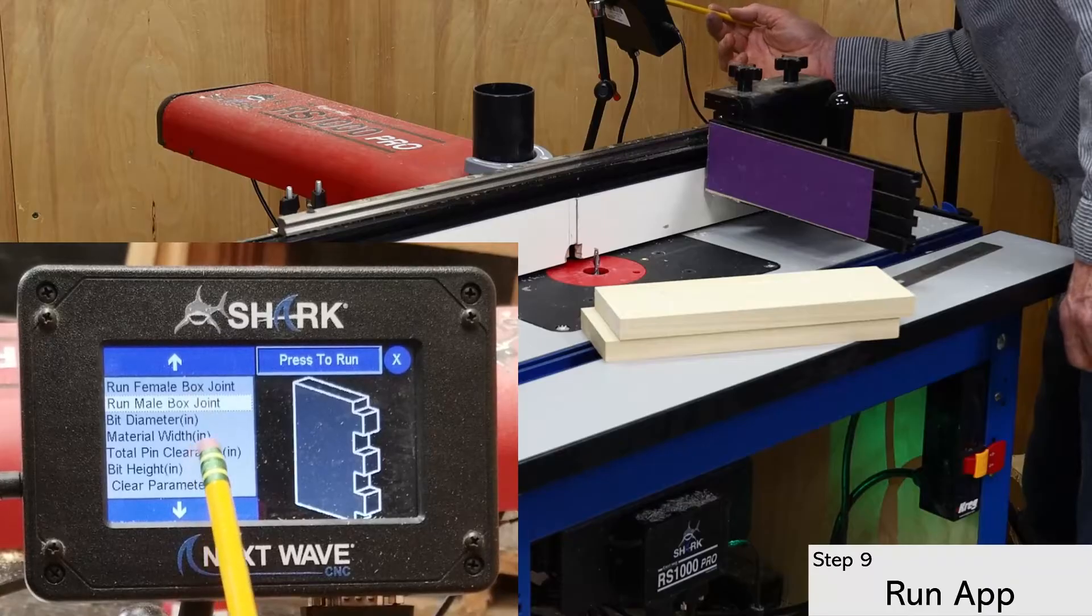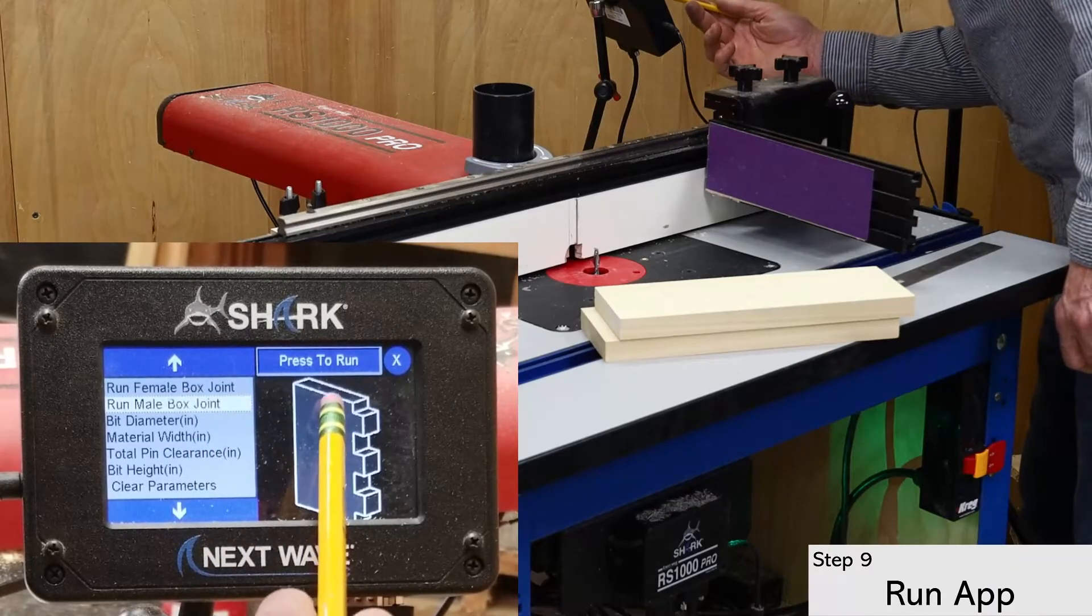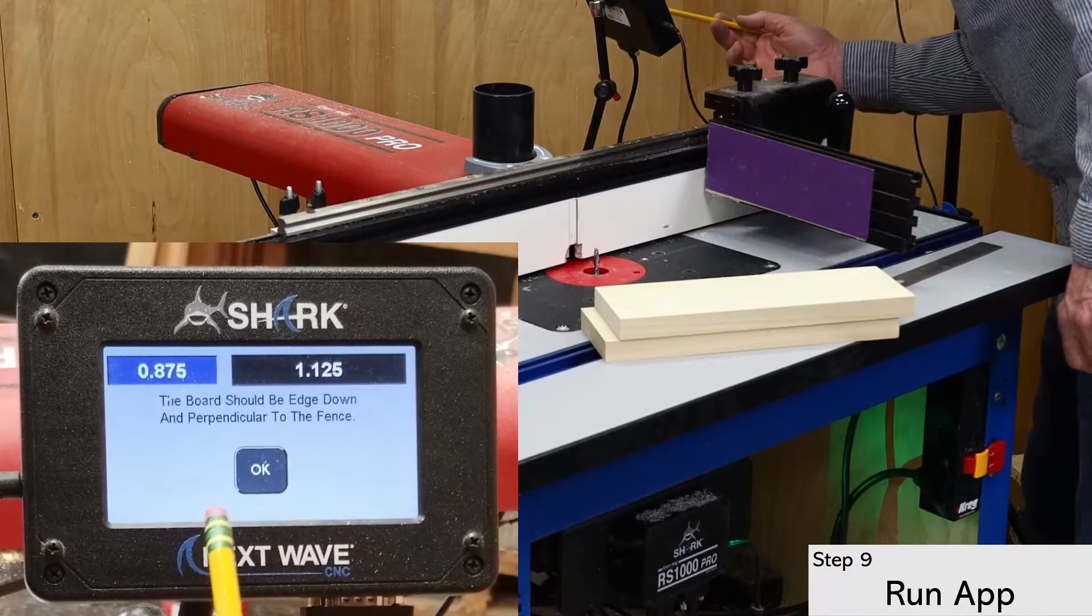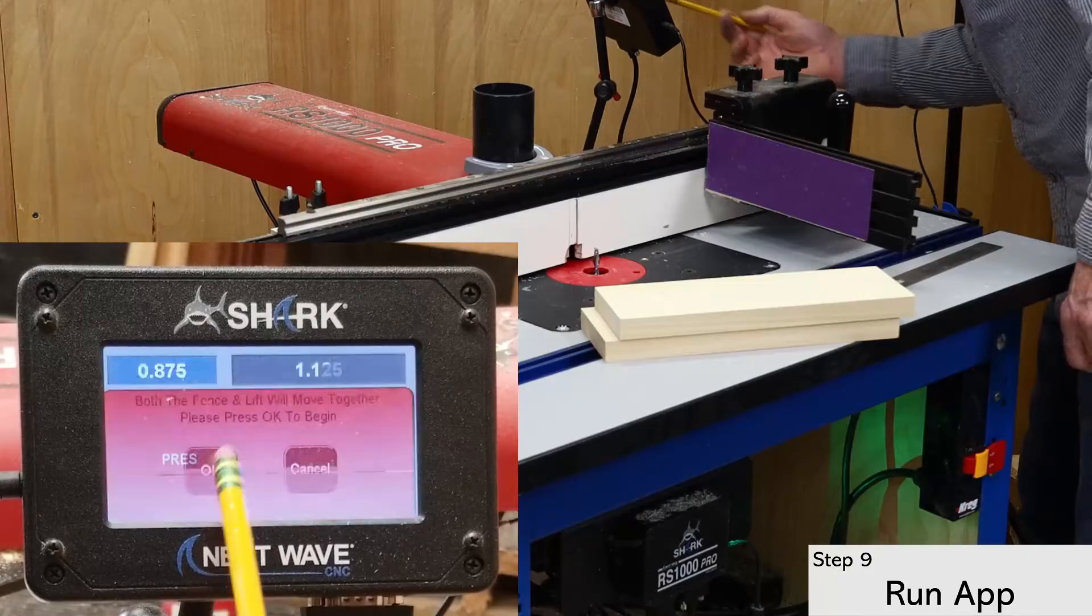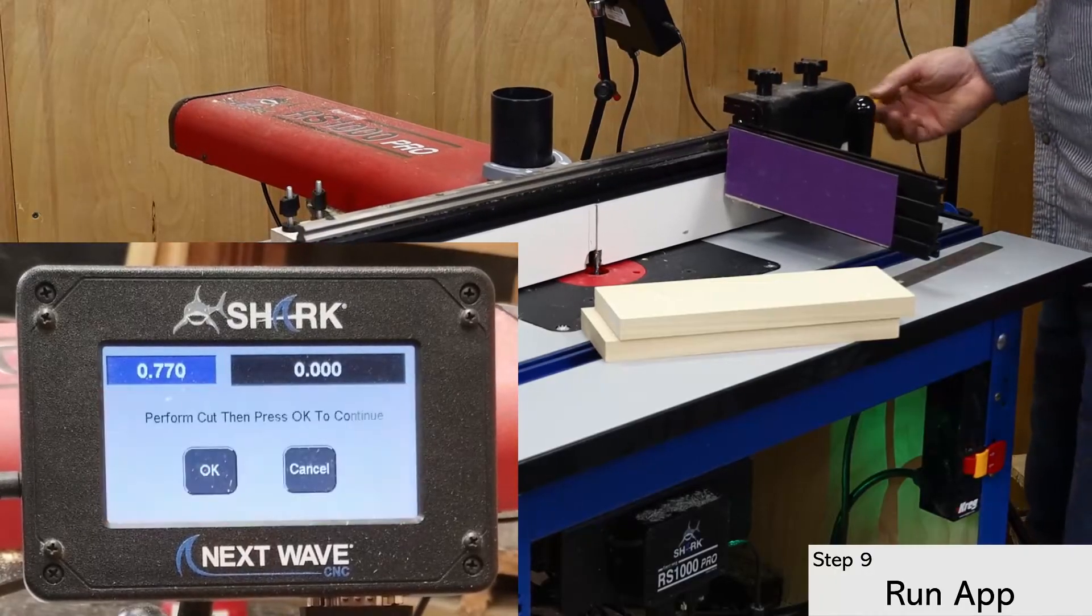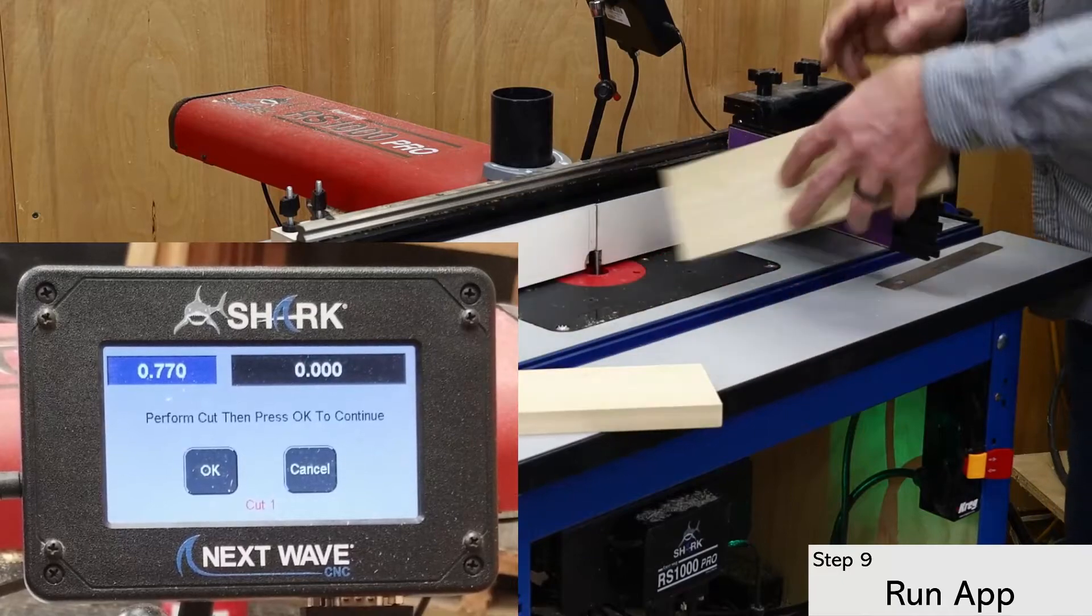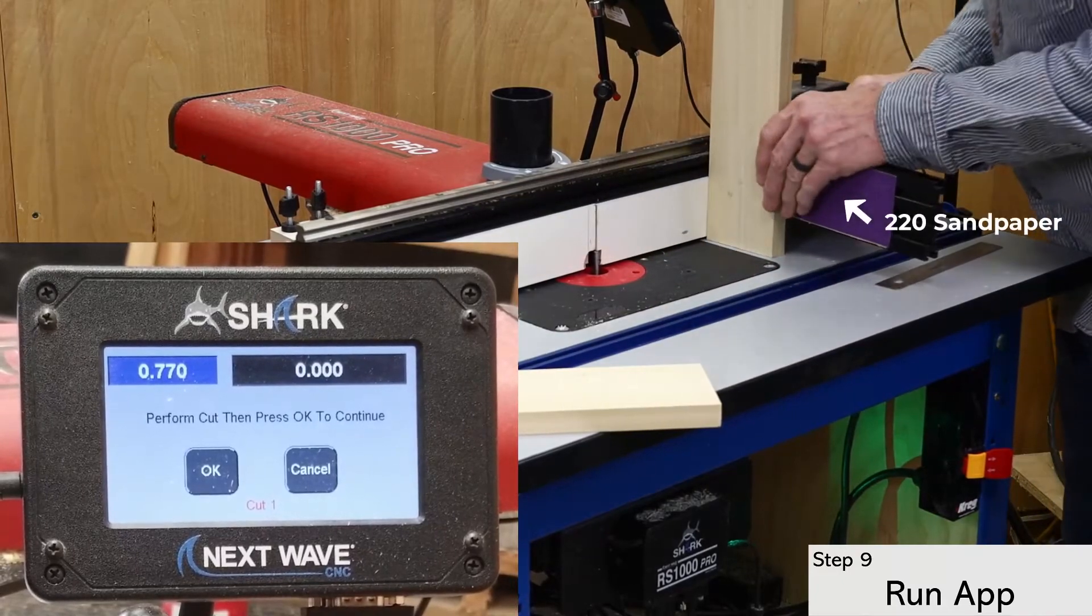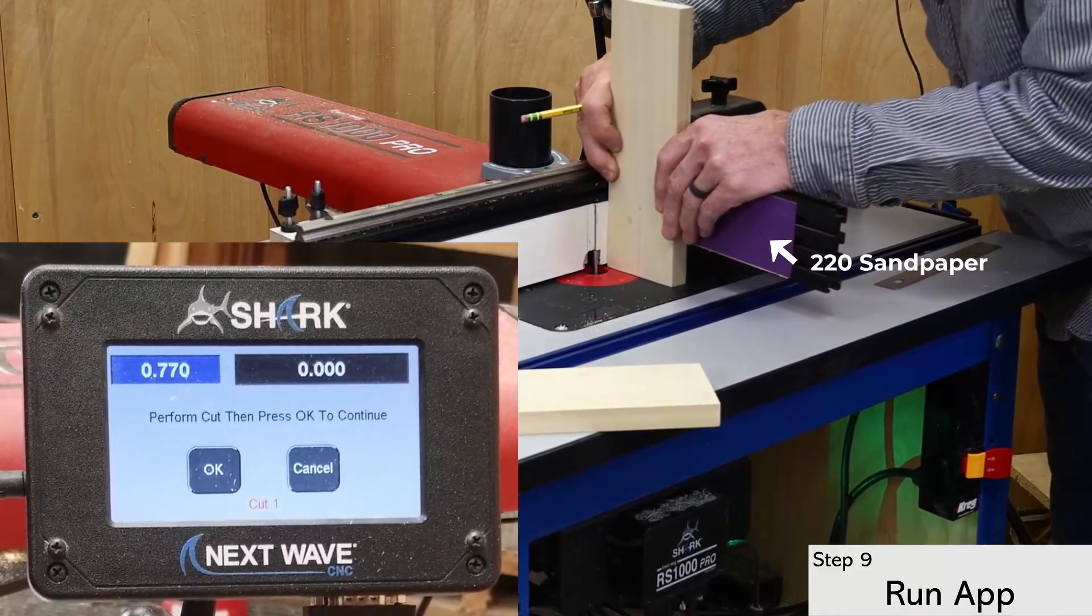You can start with either part, but since the male part is next in the list, I'll start there to remain consistent with my process. Pressing OK positions the fence and the bit for the first cut. I'm using the optional miter fence to hold the parts on end, but a shop-made sled will also work. I've also added sandpaper to the fence to keep the parts from slipping during routing.